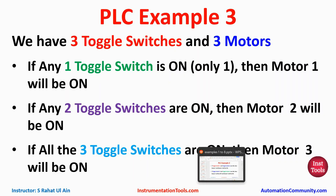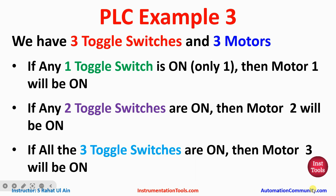PLC example three: we have three toggle switches and three motors. If any one toggle switch is on, motor 1 will be on. If any two toggle switches are on, then motor 2 will be on. If all three switches are on, motor 3 will be on. That means if only one switch is on, motor 1 will be on.